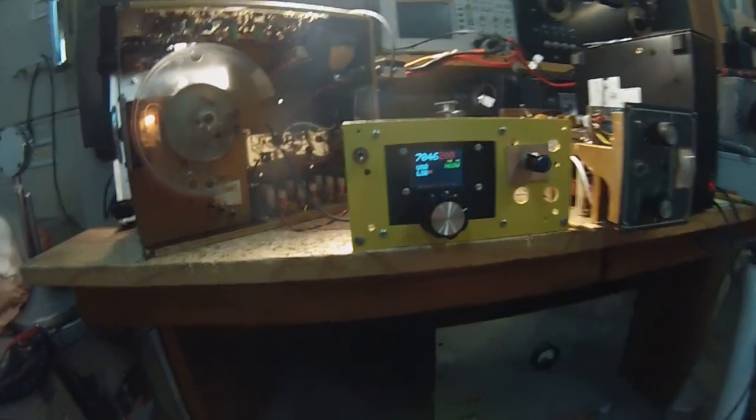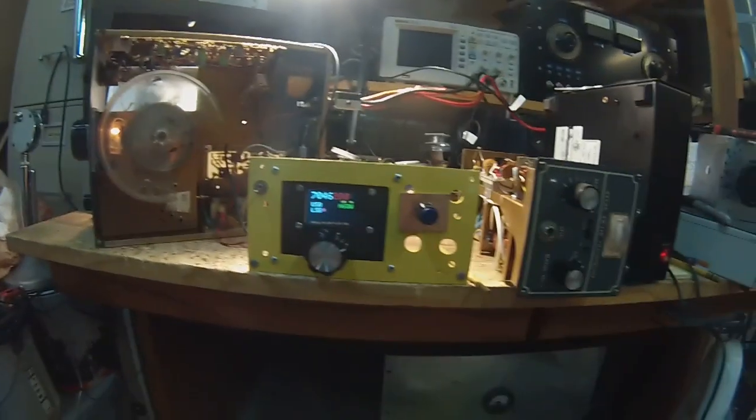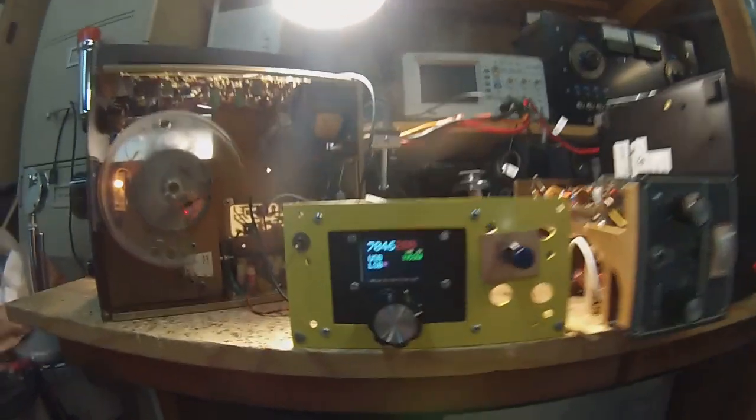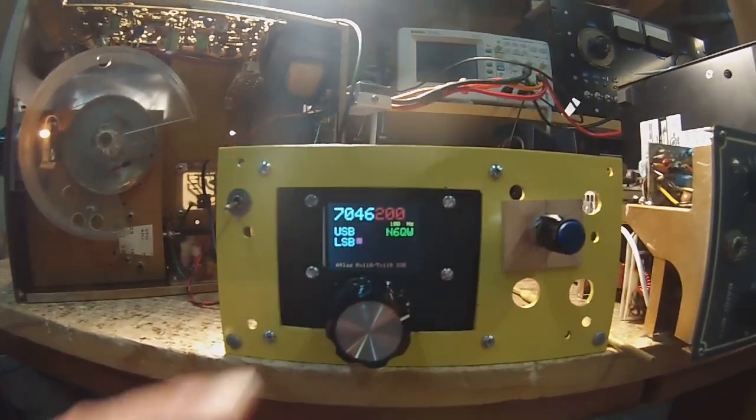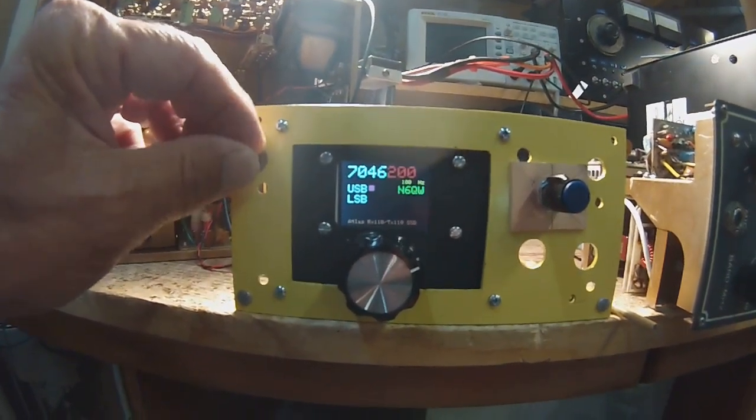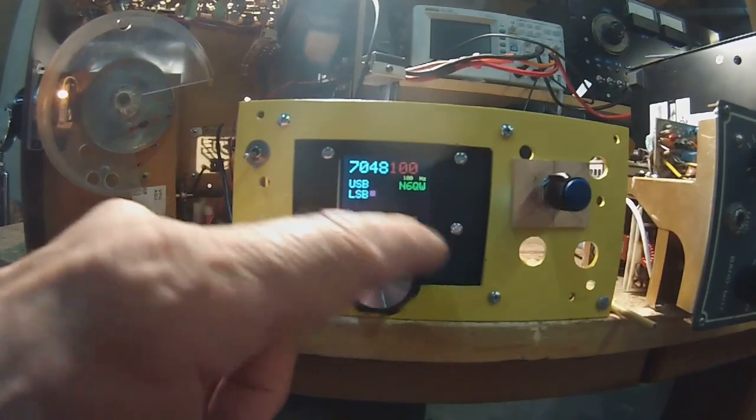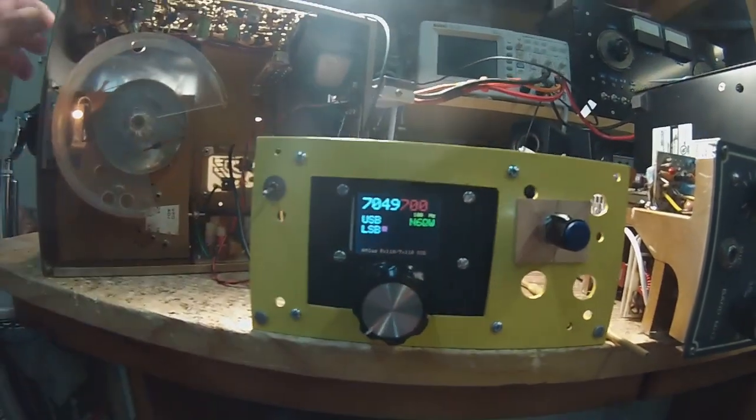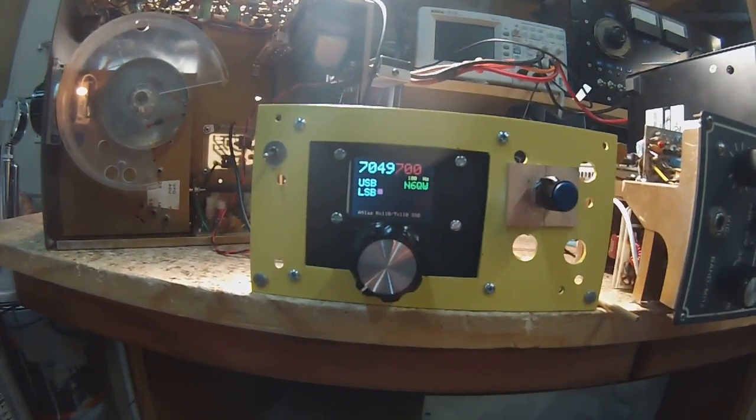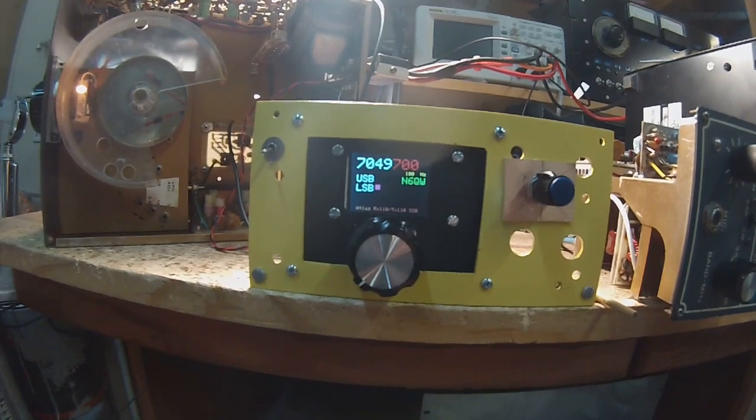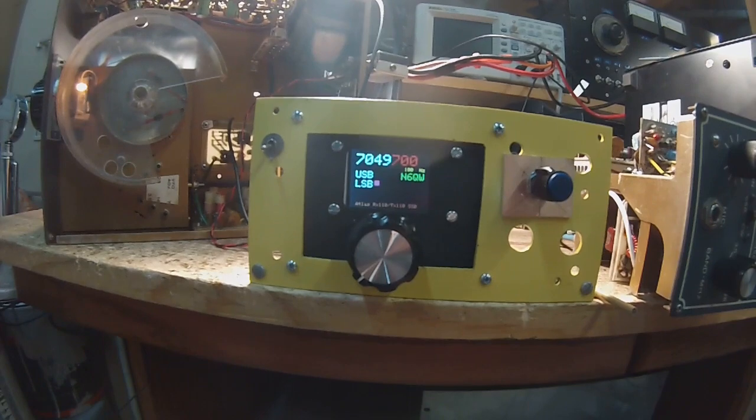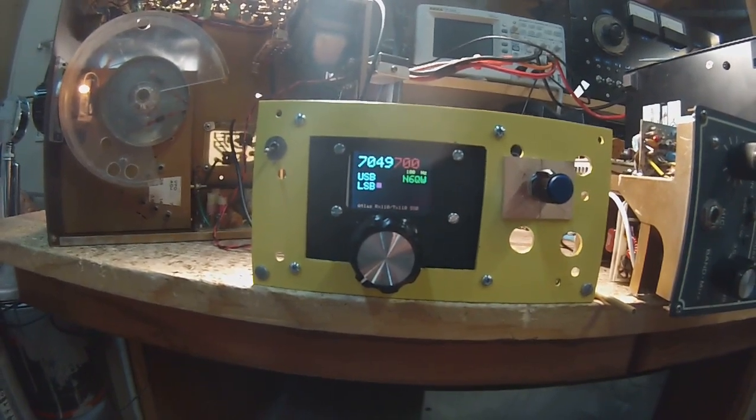I've actually had QSOs on 20 meters and 40 meters using this new SI5351. There's the color TFT and we can switch it between upper and lower sideband and it tunes very nice. With the standard RX-110 and TX-110 you could only operate lower sideband on 80 and 40 and upper sideband on the other bands. Now you can operate either sideband, which makes it kind of nice. On 40 meters you can work FT8 or whisper which requires upper sideband.